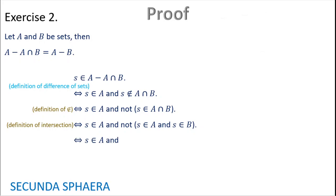Now in order to continue, it is important to use the negation of a conjunction. For that, we are going to negate each of the terms — s not in A — and we are going to change the connector: instead of AND we get an OR. So we also negate the other term, giving s not in B. This is the negation of a conjunction.